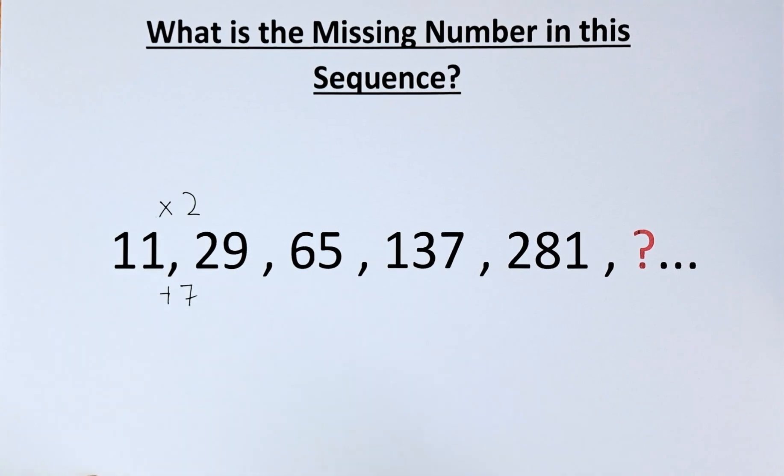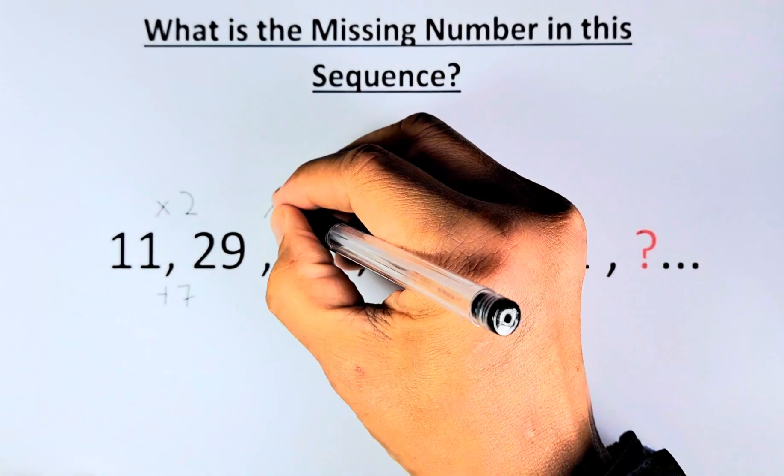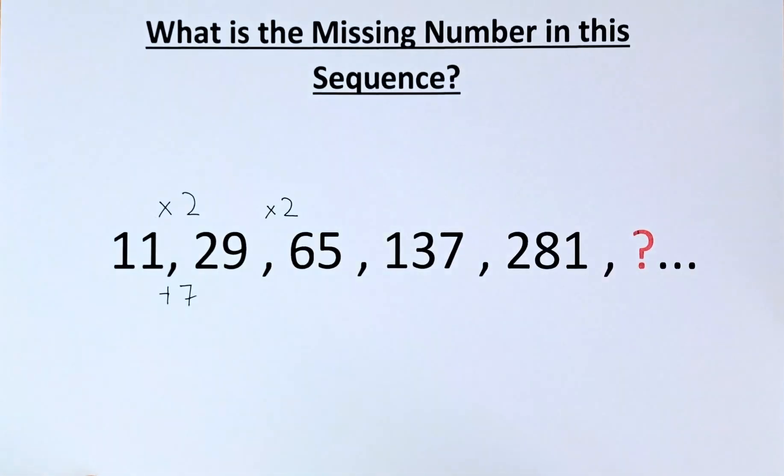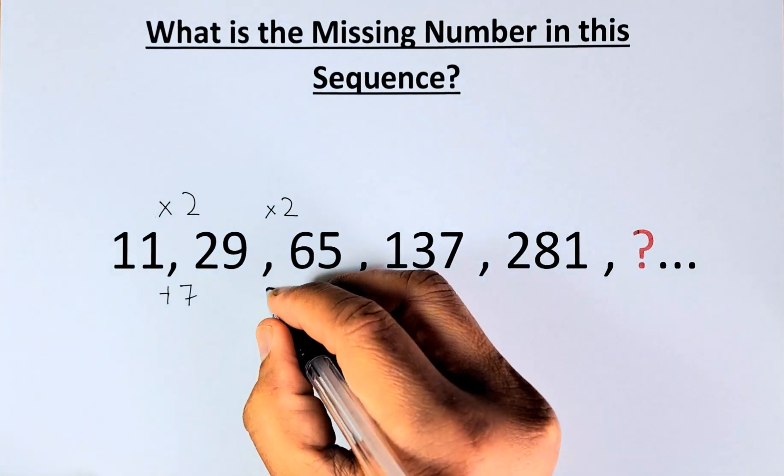Similarly, from 29 to 65, you are going to multiply by 2. It will give you 58. And then when you add 7, that will give you 65.